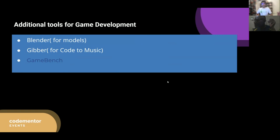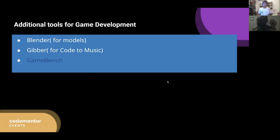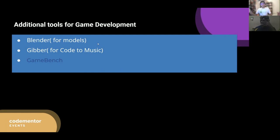For game development you have multiple additional tools. For creating 3D models you can use Blender. For music, you can use Gibber, which is an AI-implemented software that converts code into music — useful for implementing music in games. We also have GameBench for testing before publishing a game. Blender is the most popular tool for 3D models like cars. For 2D models we mostly use Photoshop-type apps, while for 3D we use Blender and Maya.